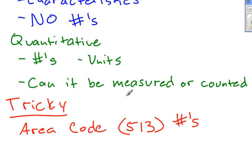this area code cannot be measured and it cannot be counted. So this area code describes me in some way. It actually gives you an idea of where I live, if you know where certain area codes are. So area code would be categorical data or a categorical variable.